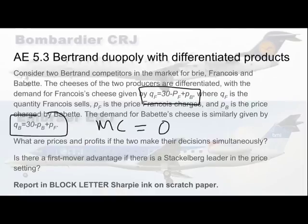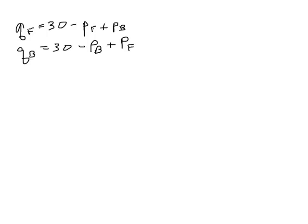Francois' quantity equals 30 minus Francois' price plus Babette's price. Babette's quantity equals 30 minus Babette's own price plus Francois' price.